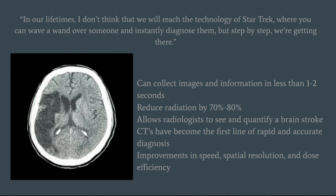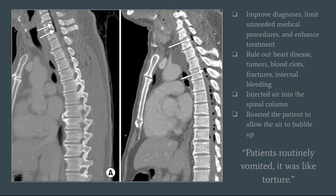CT scans improve diagnoses, limit unneeded medical procedures, and enhance treatment. They can see things that doctors would otherwise be unable to diagnose. They are able to rule out heart disease, tumors, blood clots, fractures, and internal bleeding. Before CT scans, if doctors wanted to look for a brain tumor, they had to inject air into the spinal column and rotate the patient to allow the air to bubble up around the brain to increase contrast in standard x-ray images. Doctors say it was like torture — but now with CT scans, imaging is quick and completely painless.